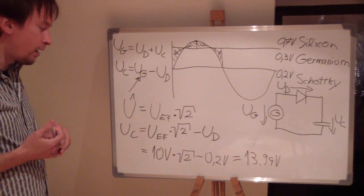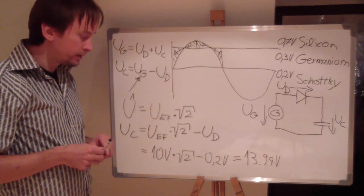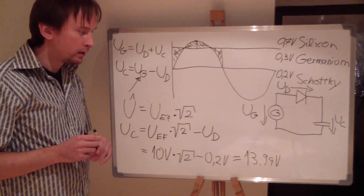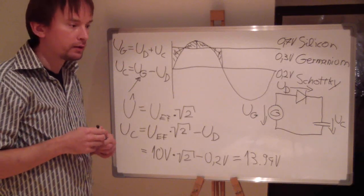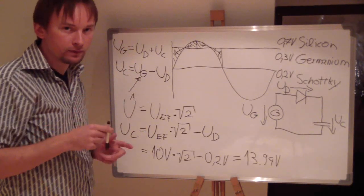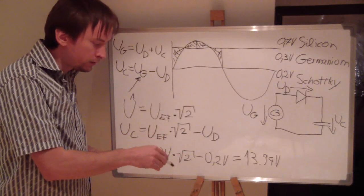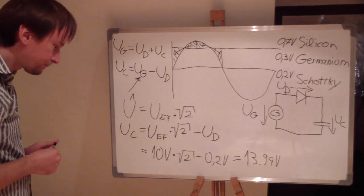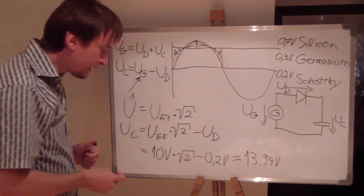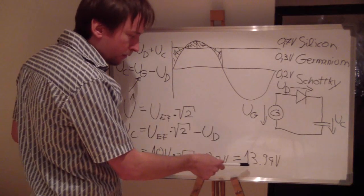There will probably be questions about how to calculate the root of 2 on a calculator that has no root function. Most calculators have a power-of function — this x-to-the-y key. So 2 to the power of 0.5 is the same as the root of 2. By this way, you can get the root of 2 without using a root function but using a power-of function.